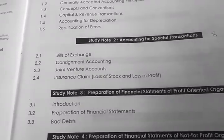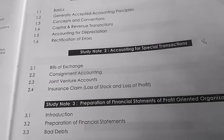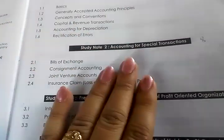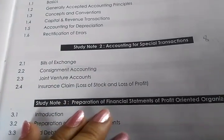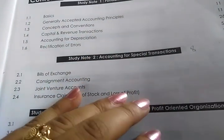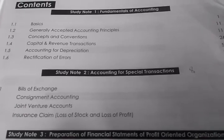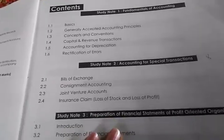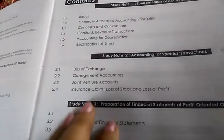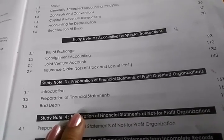Under Study Note 2, accounting for special transactions: bills of exchange — they asked a question; consignment accounting — they asked a question; joint venture — they didn't ask, but possibilities are there. They have a pattern where some questions come in December and some in June. If you analyze the last eight attempts you can get to know what kind of questions they will draft. Insurance claim — they asked a question on that too.